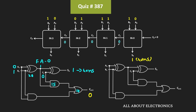Since there is no change in the carry bit, FA1 can generate its valid sum and carry output without waiting — but of course it will still take its own propagation delay. As soon as the input bits are applied to FA1, it starts generating valid sum and carry output. After 20ns, the output of the first XOR gate becomes 0. Since C1 is already 0, FA1 will generate its valid sum output after 40ns, which equals 0. But since S1 was already 0 initially, there will be no change in S1.